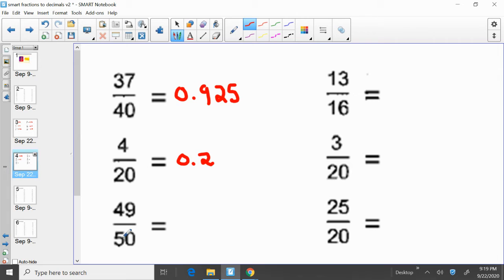Forty-nine fiftieths. Take forty-nine divided by fifty. Your numerator divided by your denominator. That equals zero point ninety-eight. So forty-nine fiftieths equals zero point ninety-eight.